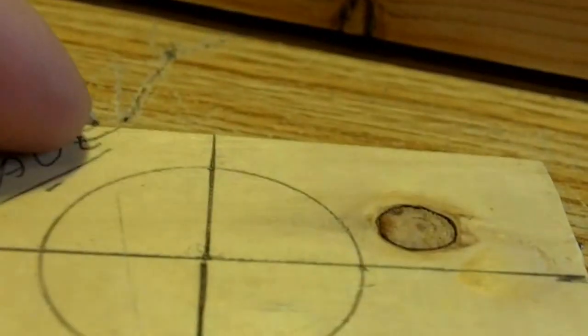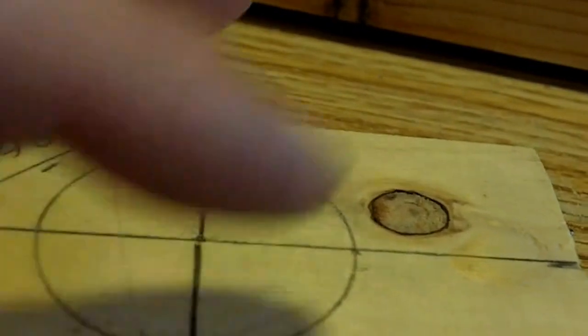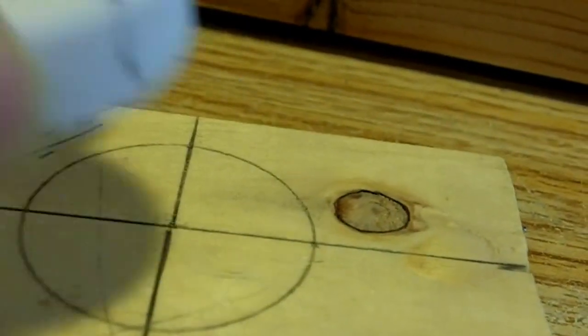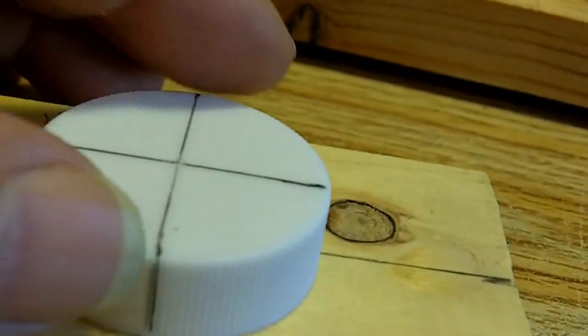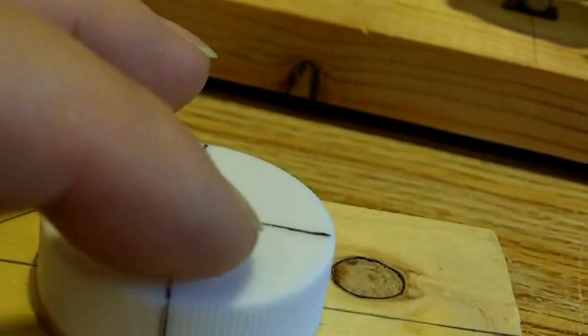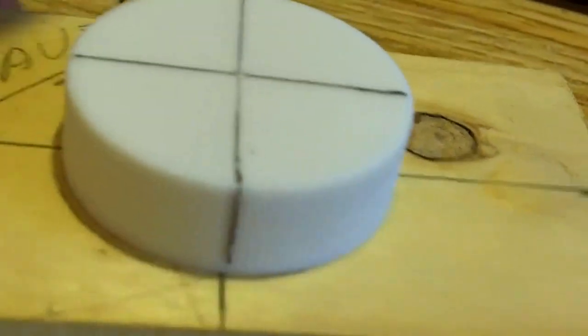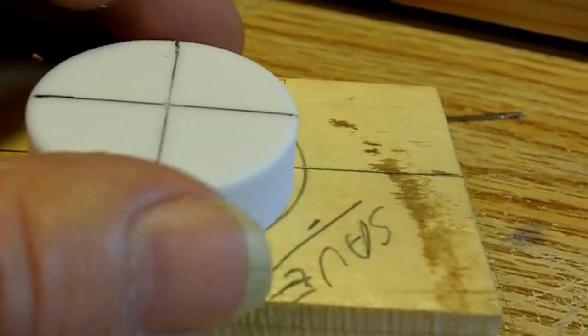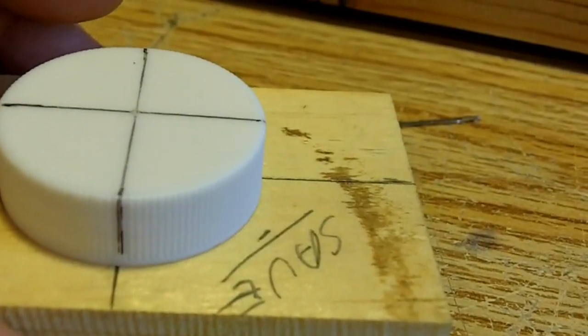Then I take the cap and lay it on top of a layout that's perfectly square. I stick the needle through to hold it there fairly firmly, then I just take a marking pencil and mark up the sides on each line. That gives me a location for the magnets.